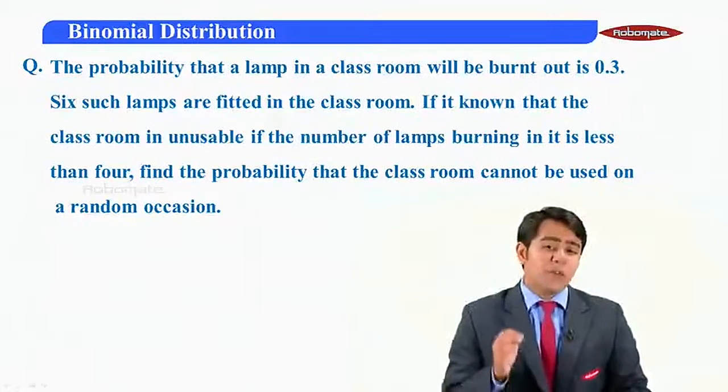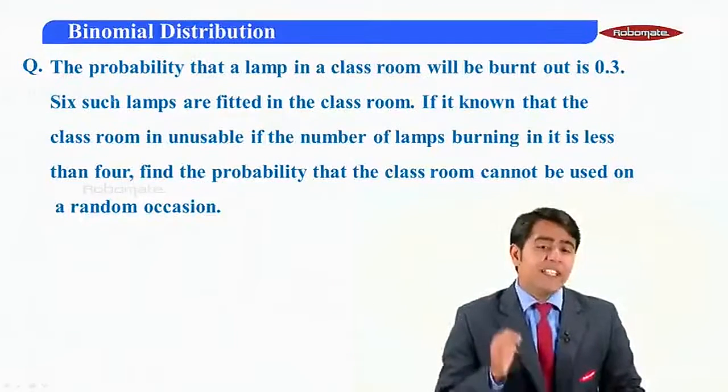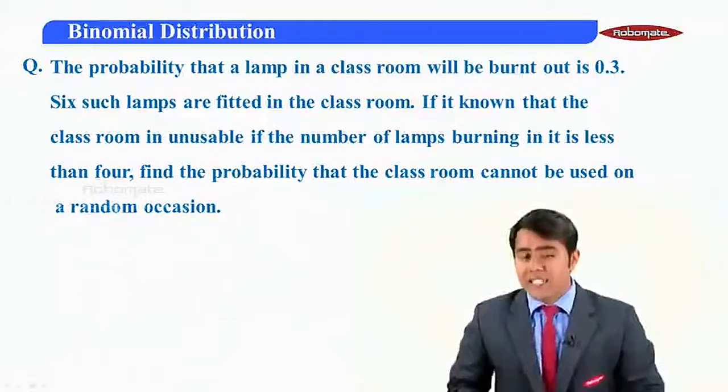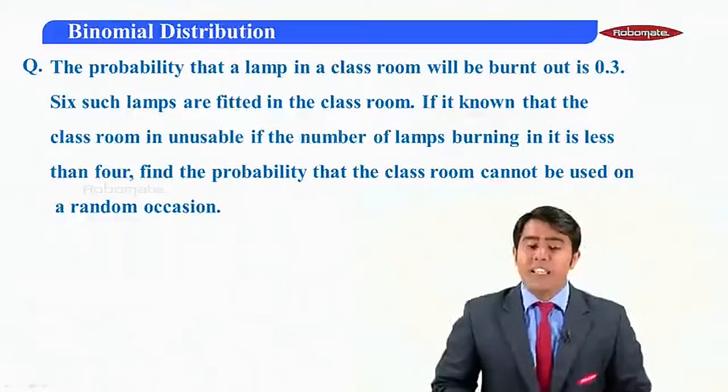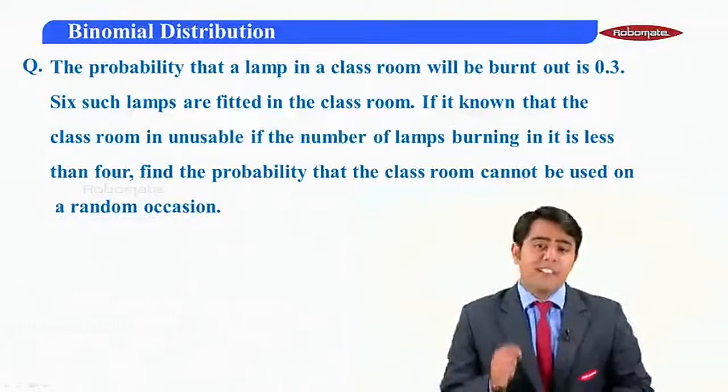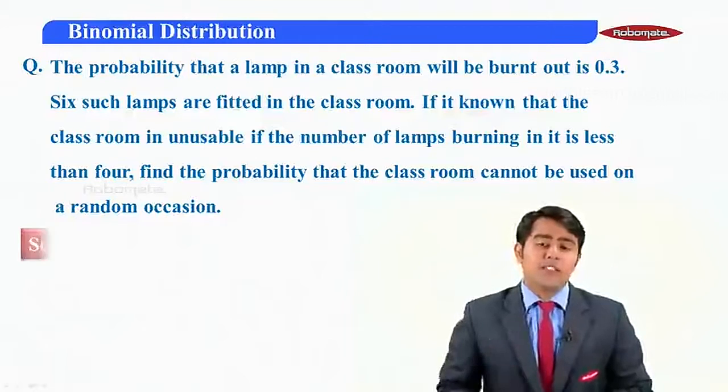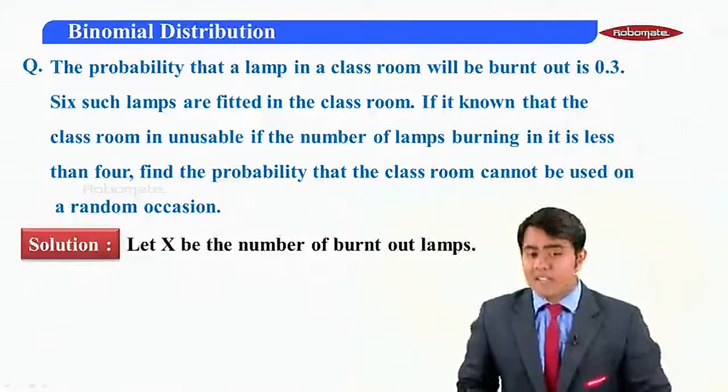So here we have to find out the probability that we cannot use the classroom. Now as the data is given, the classroom is unusable when the number of lamps burning in it are less than four. So therefore here we will start the solution as follows.